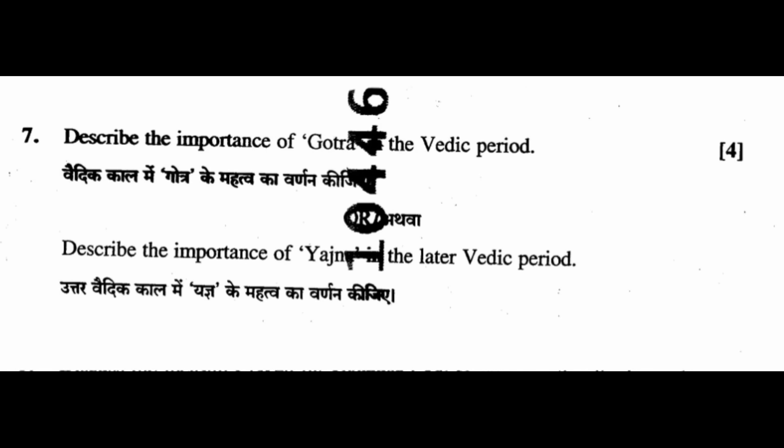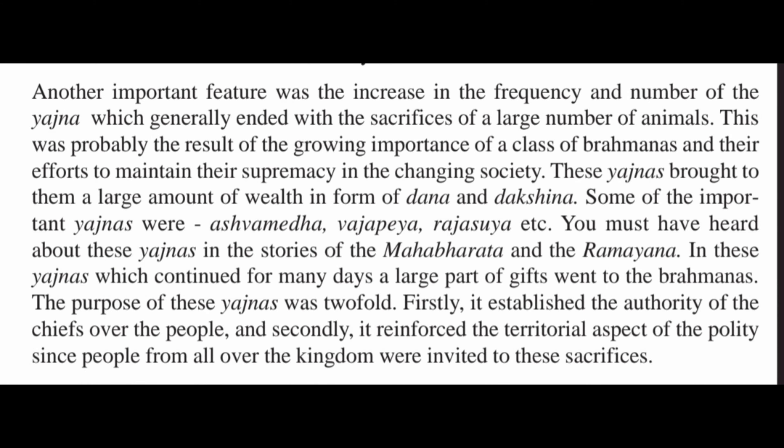Question 7 (alternate): Describe the importance of Yajna in the later Vedic period. An important feature was the increase in the frequency and number of Yajnas, which generally ended with the sacrifices of a large number of animals. This was probably the result of the growing importance of the Brahmana class, who sought to maintain their supremacy in changing society. These Yajnas brought them large amounts of wealth in the form of Dhana and Dakshina. Some important Yajnas were Ashvamedha, Vajapeya, and Rajasuya. In these Yajnas, which continued for many days, a large part of the gifts went to the Brahmanas. The purpose was twofold: it established the authority of chiefs over the people, and it reinforced the territorial aspects of polity since people from all over the kingdom were invited to these sacrifices.